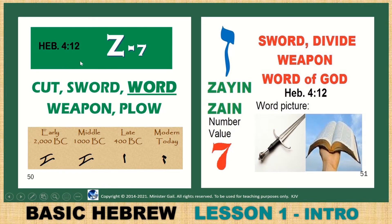Zayin — cut sword. Hebrews 4:12 — the word of God is sharper than a two-edged sword. Z, number 7, Zorro, cut sword. Your word is the sword — weapon or plow. It looked like a plow originally; today it looks like the number 7, or a sword with a handle. The word of God is sharper than a two-edged sword, Hebrews 4:12 — dividing. Value of 7.